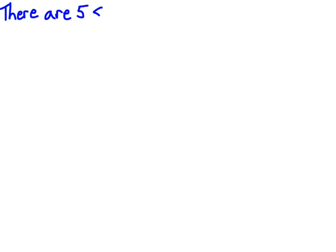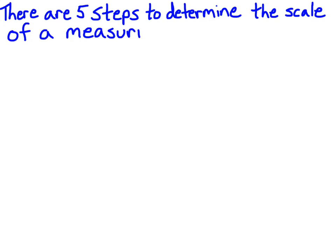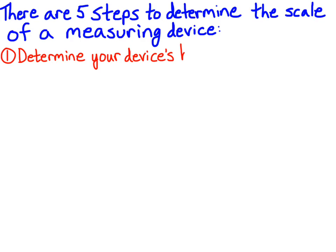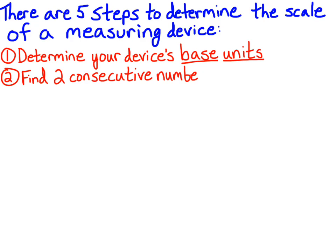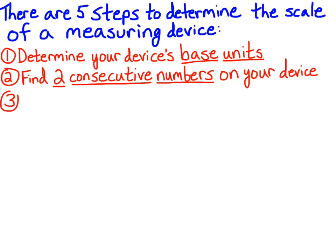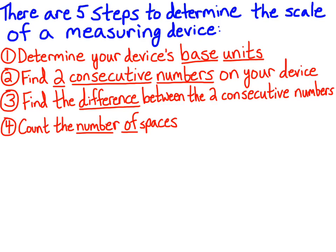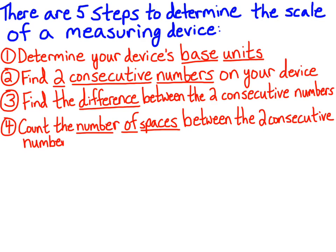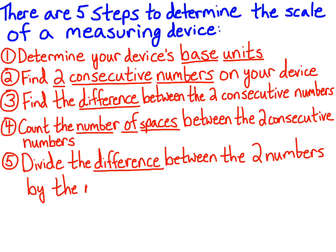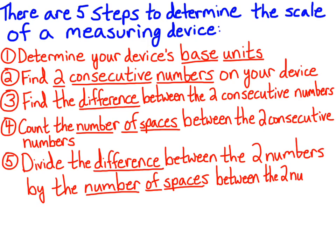There are five steps you should follow to determine the scale of your measuring device. Step one: determine your device's base units. Step two: find two consecutive numbers on your device. Step three: find the difference between those two consecutive numbers. Step four: count the number of spaces between the two consecutive numbers. Step five: divide the difference between the two numbers by the number of spaces between them.